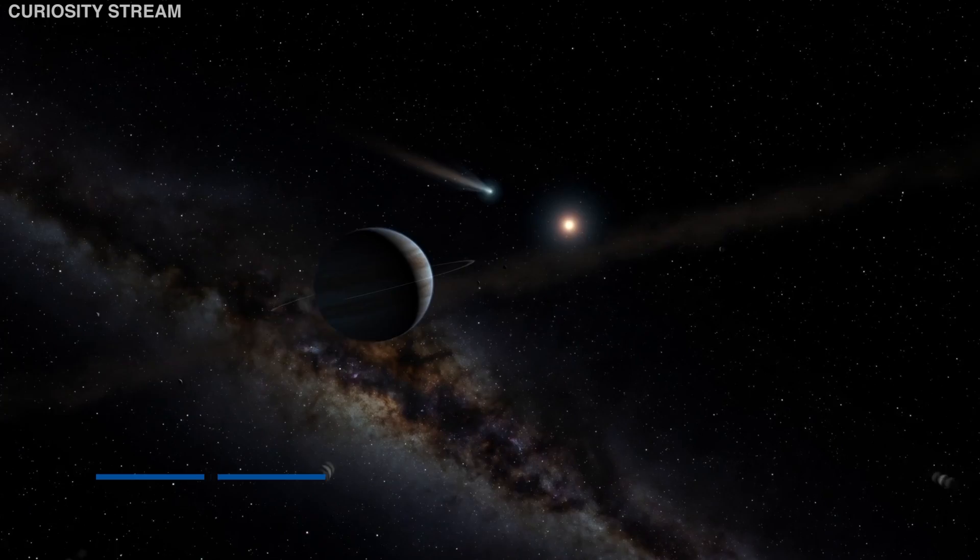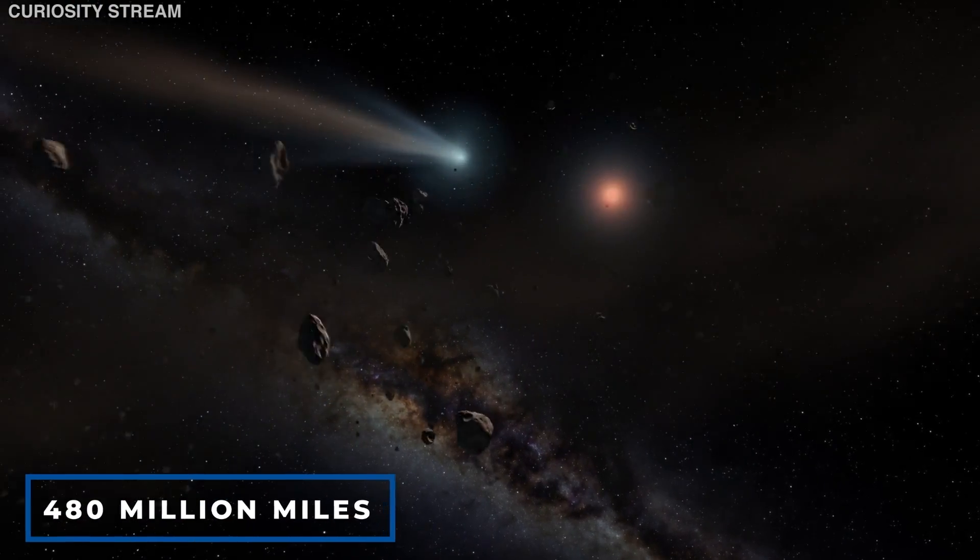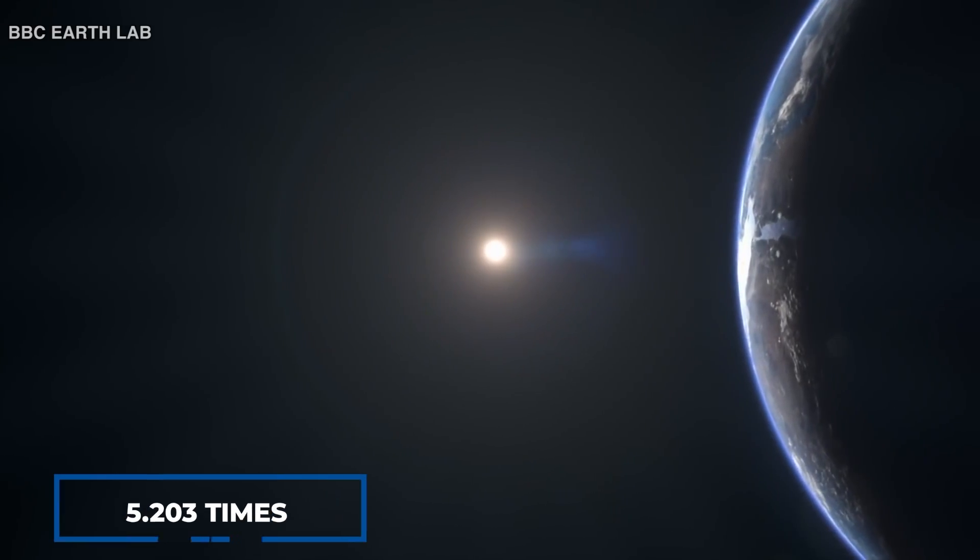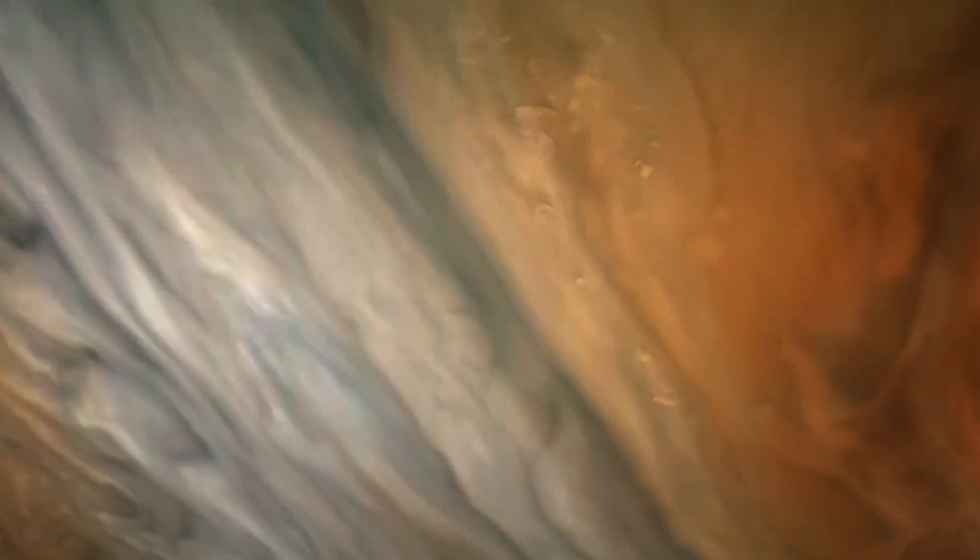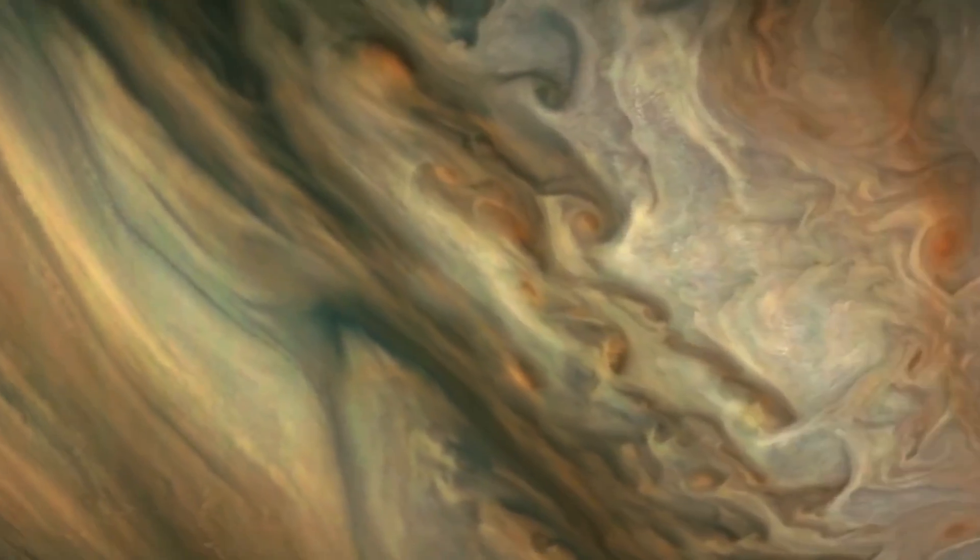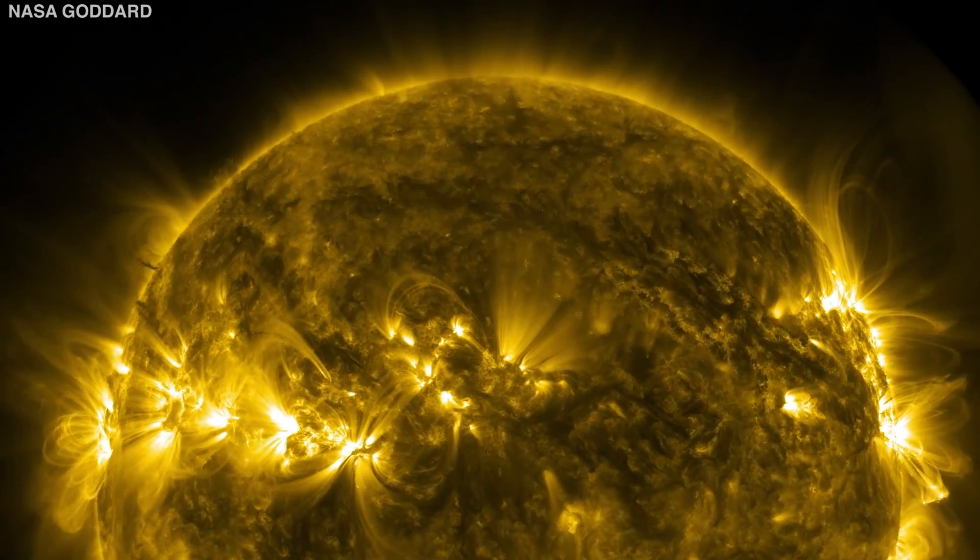Jupiter's orbit brings it about 480 million miles from the sun on average, which is 5.203 times larger than the Earth-sun distance. Jupiter's atmosphere, which is composed mostly of hydrogen and helium, is comparable to that of the sun.